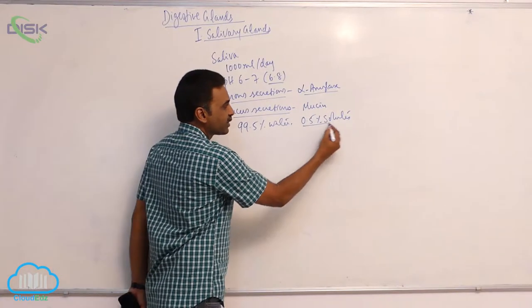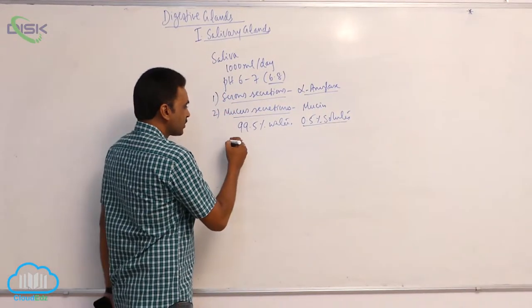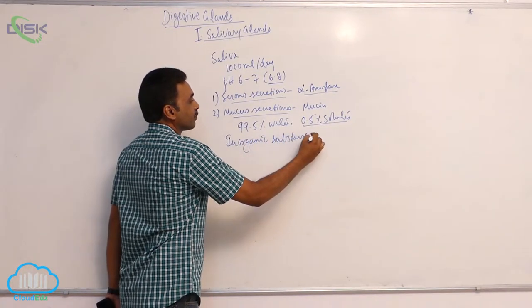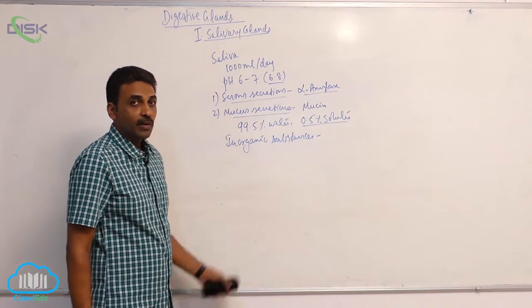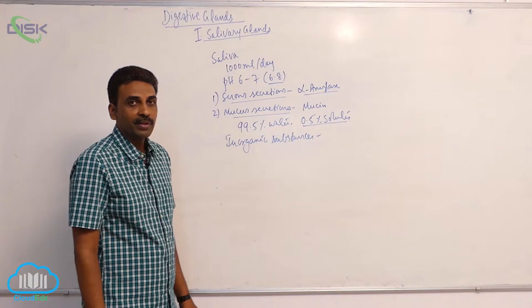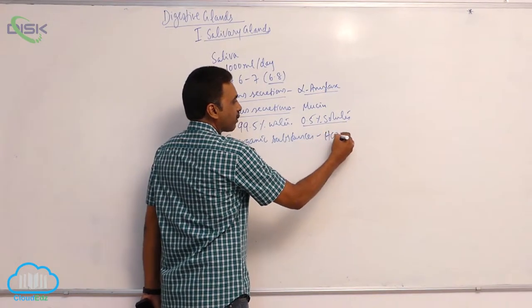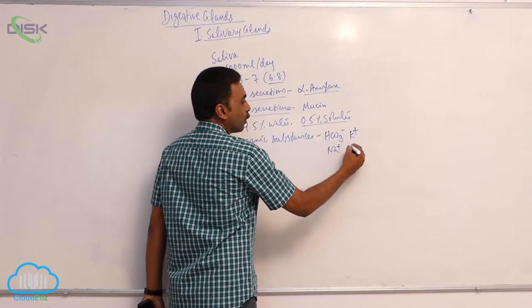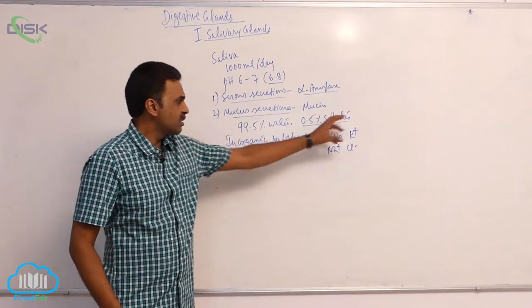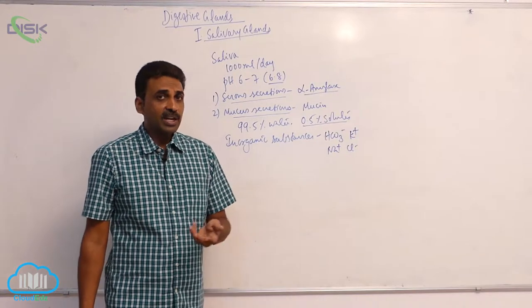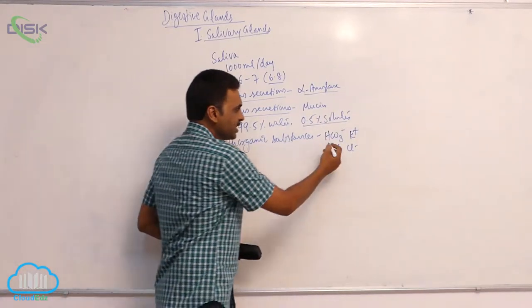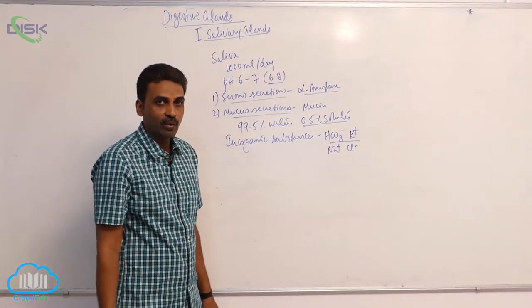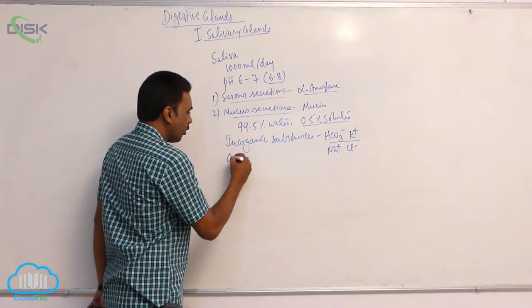The solutes include inorganic substances and organic substances. The inorganic substances include salts — sodium, potassium, bicarbonate, and chlorides. Out of these, bicarbonate and potassium are present in higher quantities, while sodium and chloride are lesser in quantity.